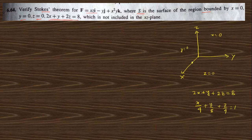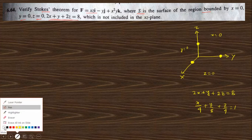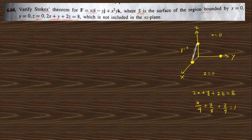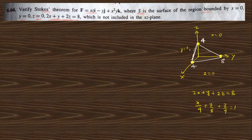That means the plane intersects the x-axis at x=4, the y-axis at y=8, and the z-axis at z=4. So on the diagram: z=4 is here, x=4 is here, and y=8 is here. This is the plane, clear.